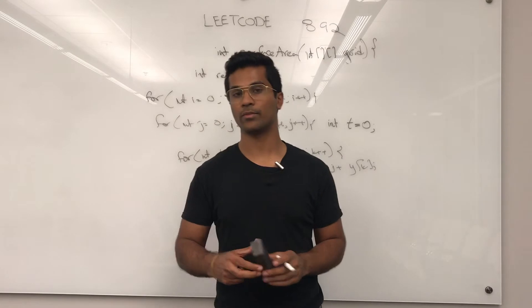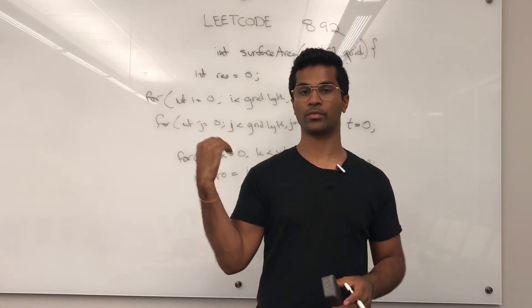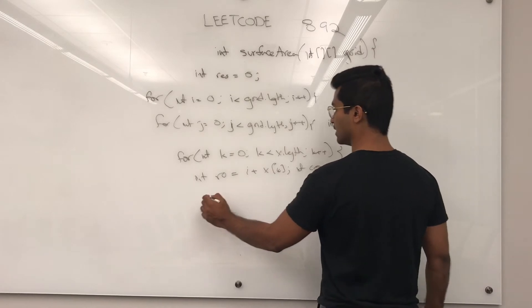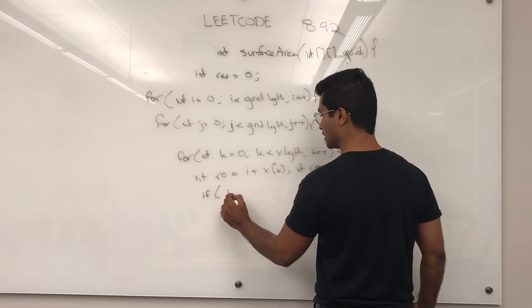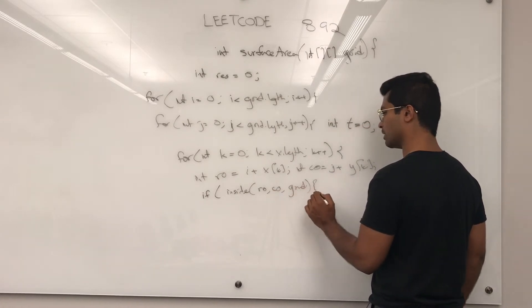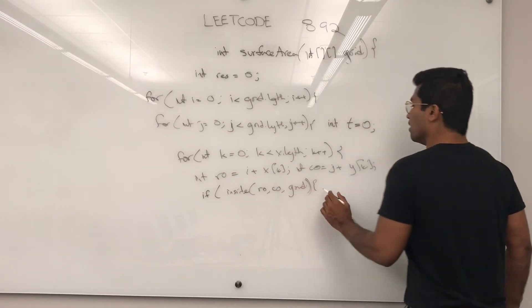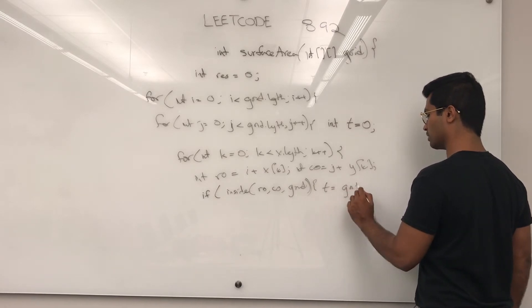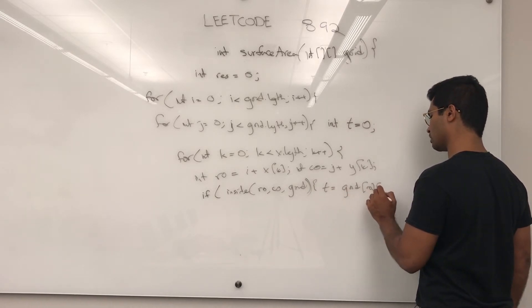This is going to be, if we're inside, then I need to subtract the temp from my height on that side. If it's like that, if inside row, col, grid, right? If it's inside, then t is going to be equal to grid of row of col.